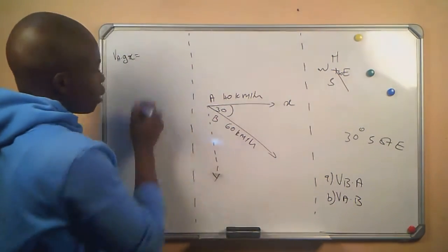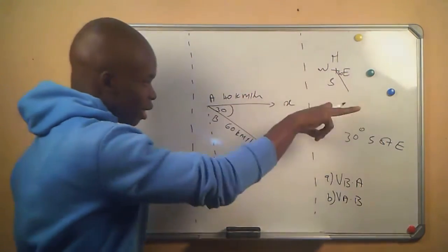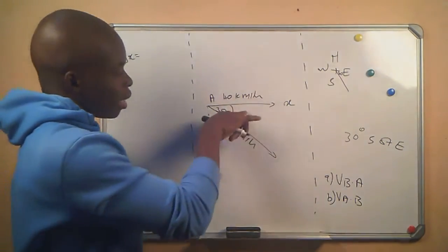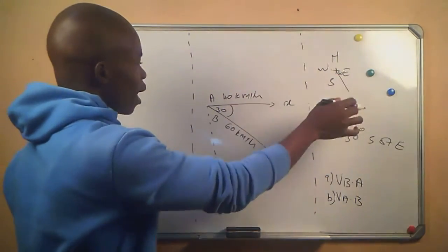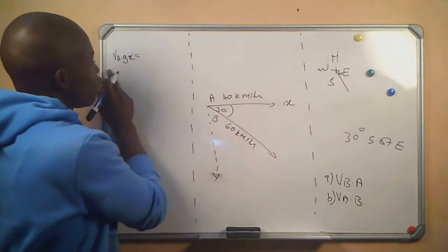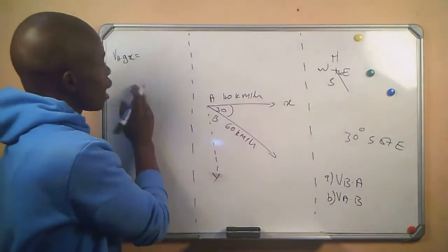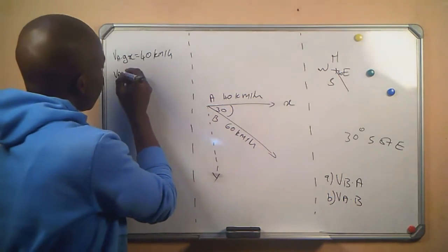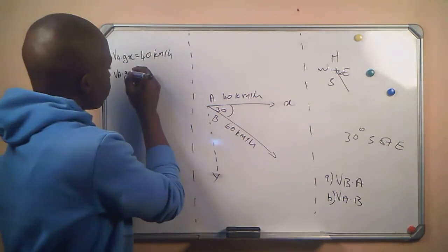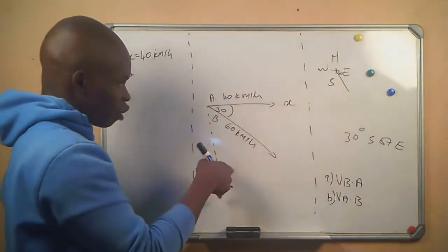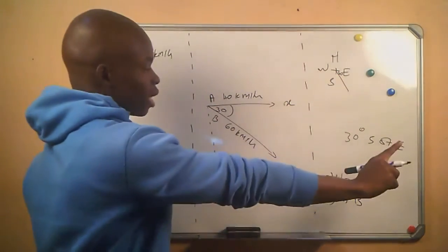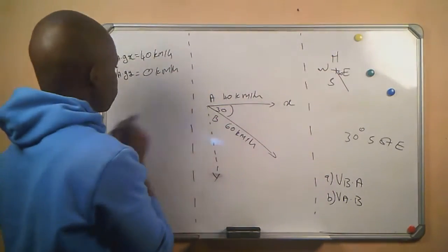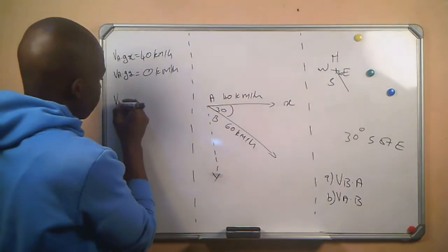The velocity of Car A relative to ground in the x-direction: since the car is traveling at 40 kilometers per hour and it's in the x-direction (going east), the velocity of Car A relative to ground x will be 40 kilometers per hour. For the velocity of Car A relative to ground y: since our car is only moving in the x-direction, y is zero kilometers per hour.